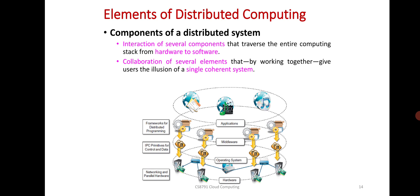Components of distributed systems involve interaction of several components that travel the entire computing stack from hardware to software. Collaboration of several elements working together gives users the illusion of a single coherent system.